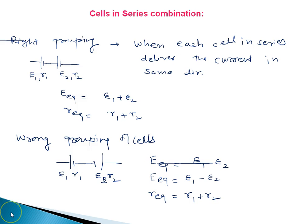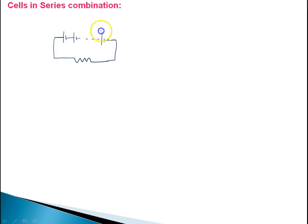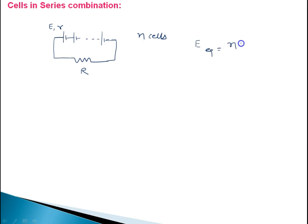Now we go into the series combination in detail. Suppose there are N cells, each having the same EMF E and the same internal resistance r, connected in right grouping to an external resistance. If I ask you the net EMF of the circuit, since they are connected in the same polarity, the answer is NE.